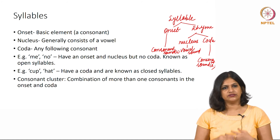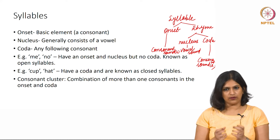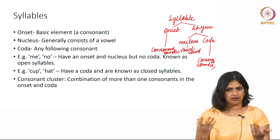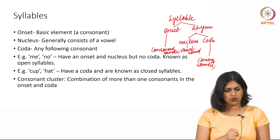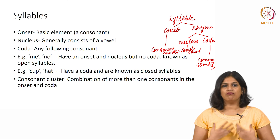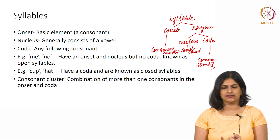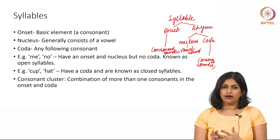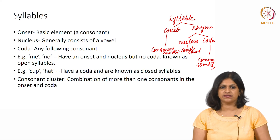The other technical jargon I want to introduce is consonant cluster. When two or more consonants come together in an onset or a coda, that is known as a consonant cluster. We will have more examples and discussions in the next session about syllables, onset, nucleus, coda, and consonant clusters. Please think about more words in English as well as in your own language and do some homework to find out interesting examples to discuss in phonetics and phonology.